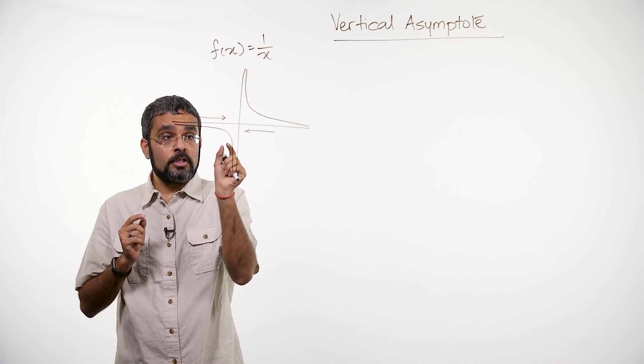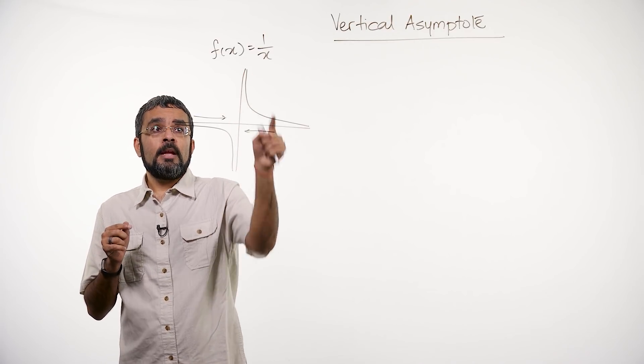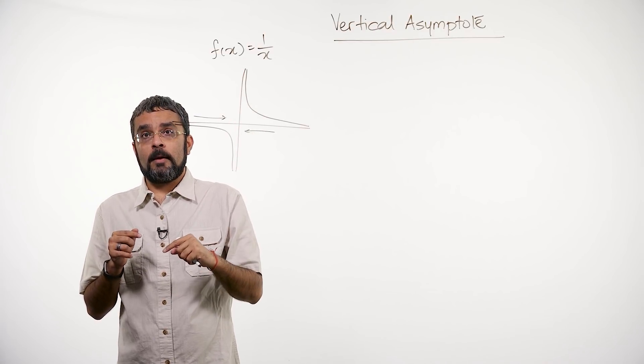But it doesn't. It goes just very close to the y-axis. So we say now that the y-axis here is a vertical asymptote of my graph.